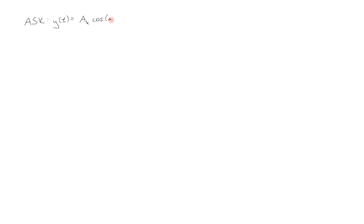We're going to focus on two techniques: amplitude shift keying, or ASK, and phase shift keying, or PSK. In ASK, our transmitted signal Y of T is A sub K times cosine of omega C T plus some phase. This is our carrier signal at a frequency of omega sub C with some phase offset, which doesn't really matter. But it has an amplitude that we're going to change in accordance with our actual signal. For example, A sub K might equal 0 and 1, which means that to transmit a 0, we multiply by 0 so Y of T equals 0, and to transmit a 1 we multiply by 1, giving us our carrier with an amplitude of 1.